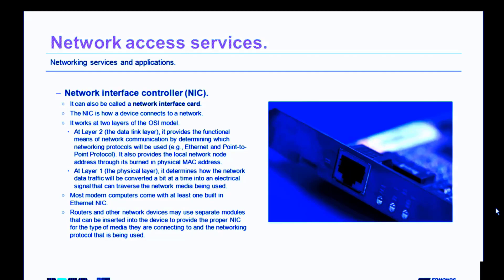At Layer 2, the data link layer, the NIC provides the functional means of network communication by determining which networking protocols will be used — such as Ethernet or point-to-point protocol. It also provides the local network node address through its burned-in physical media access control address. At Layer 1, the physical layer, the NIC determines how network data traffic will be converted, a bit at a time, into an electrical signal that can traverse the network media being used.